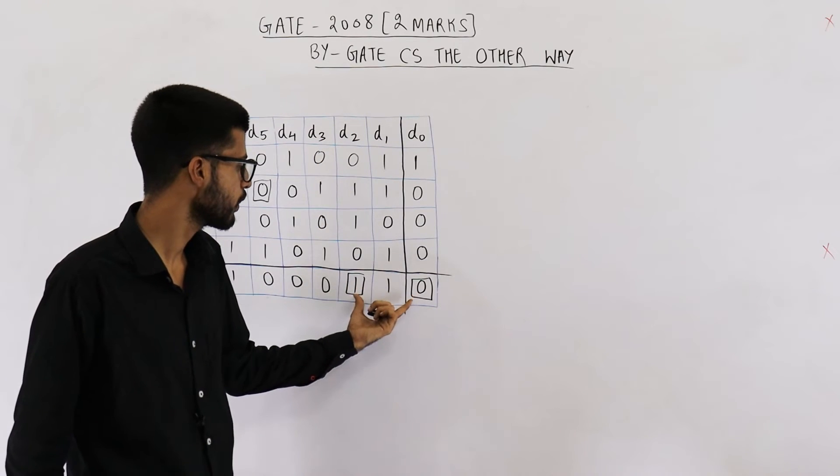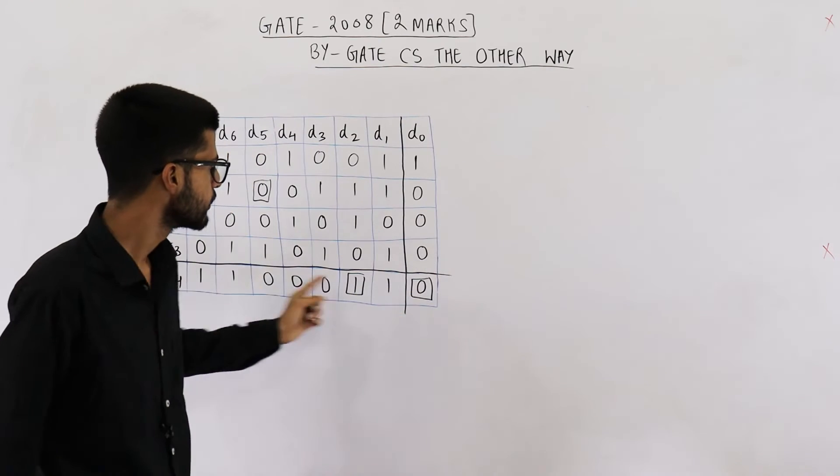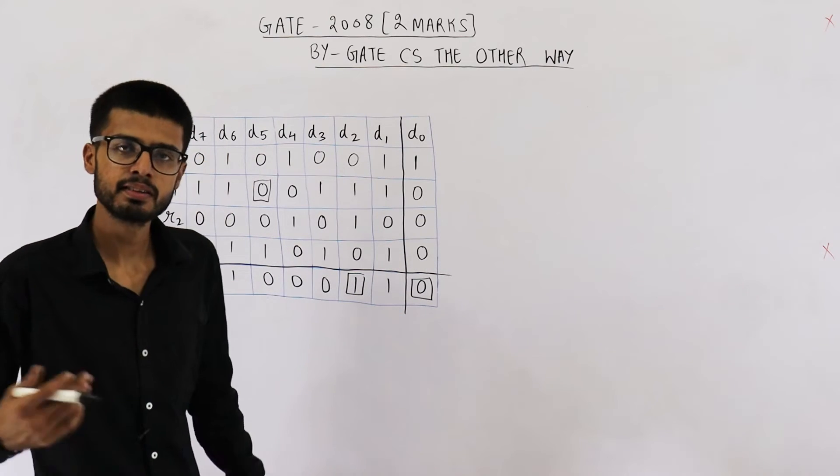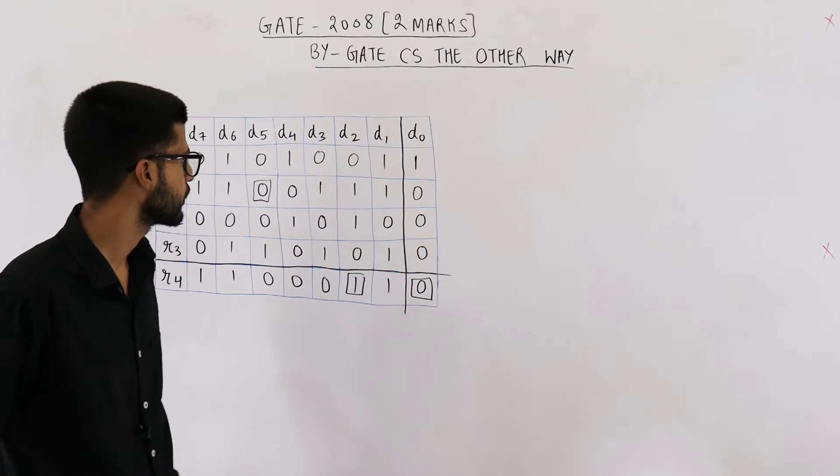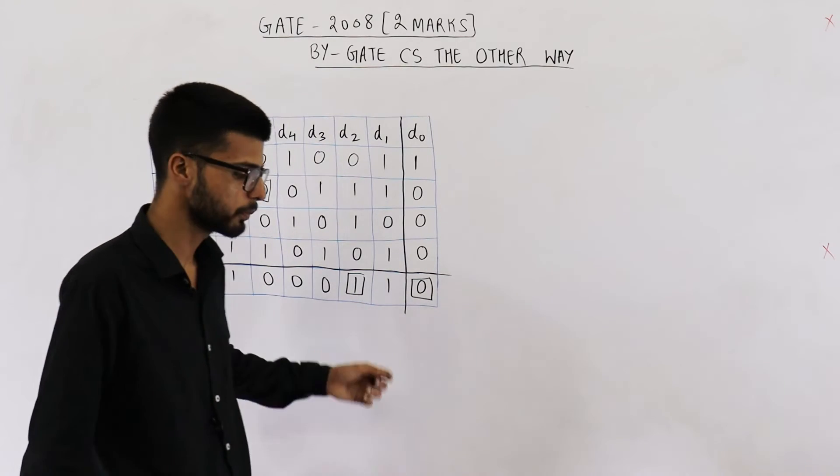Now we have two errors — one in a row and one in a column. We can simply take their intersection and assume an error there. By assuming so, both of these are corrected. That means the sender actually intended to send a 1 here and a 0 there. The parity of both columns becomes even, and this row still has even parity.